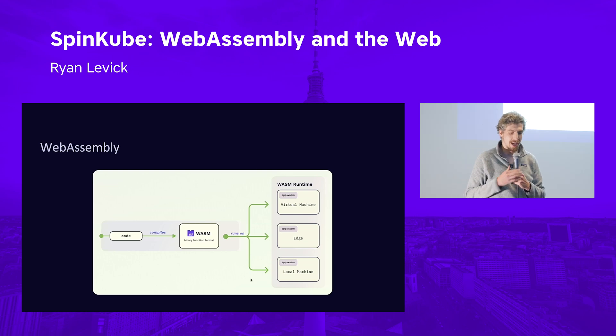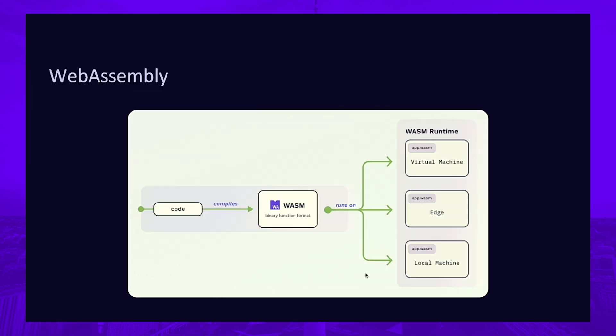We'll start with a refresher about WebAssembly. We start with code — probably Rust code if we're at a Rust meetup — and instead of compiling it for x86 or ARM architecture, we compile it to WebAssembly. WebAssembly is a web-native binary format for machine code. The cool thing is it can run anywhere you have a WebAssembly runtime: that includes browsers, but also edge environments, IoT machines, and more.